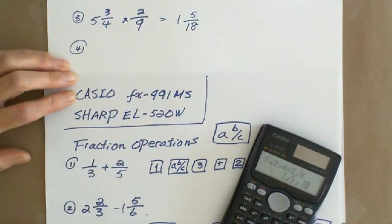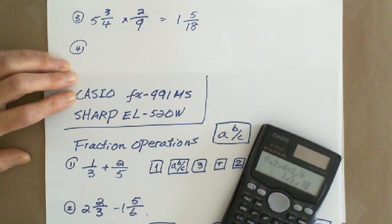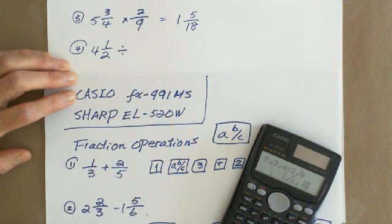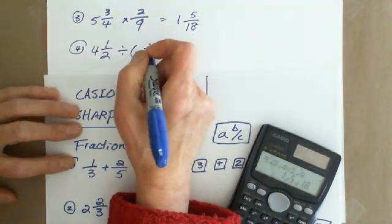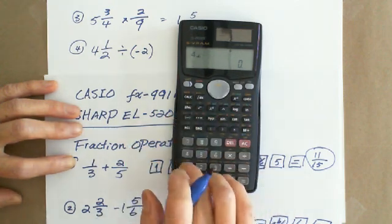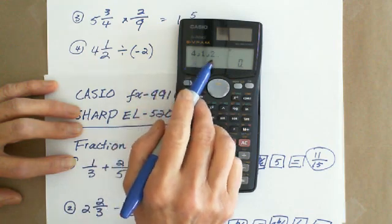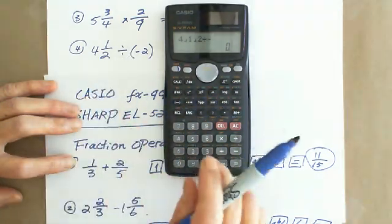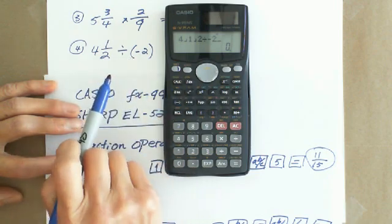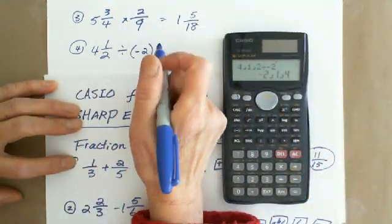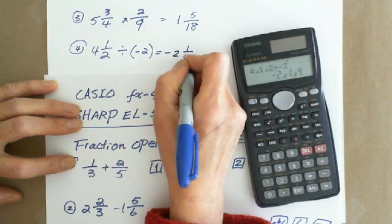For division, it's the same thing. For example, 4 and 1 over 2 divided by negative 2. You do 4 ABC 1 ABC 2, which enters the mixed number, divided by negative 2. Since 2 is a whole number, you don't need to use ABC over 1. Just divide by negative 2, and it gives you negative 2 and 1 over 4.